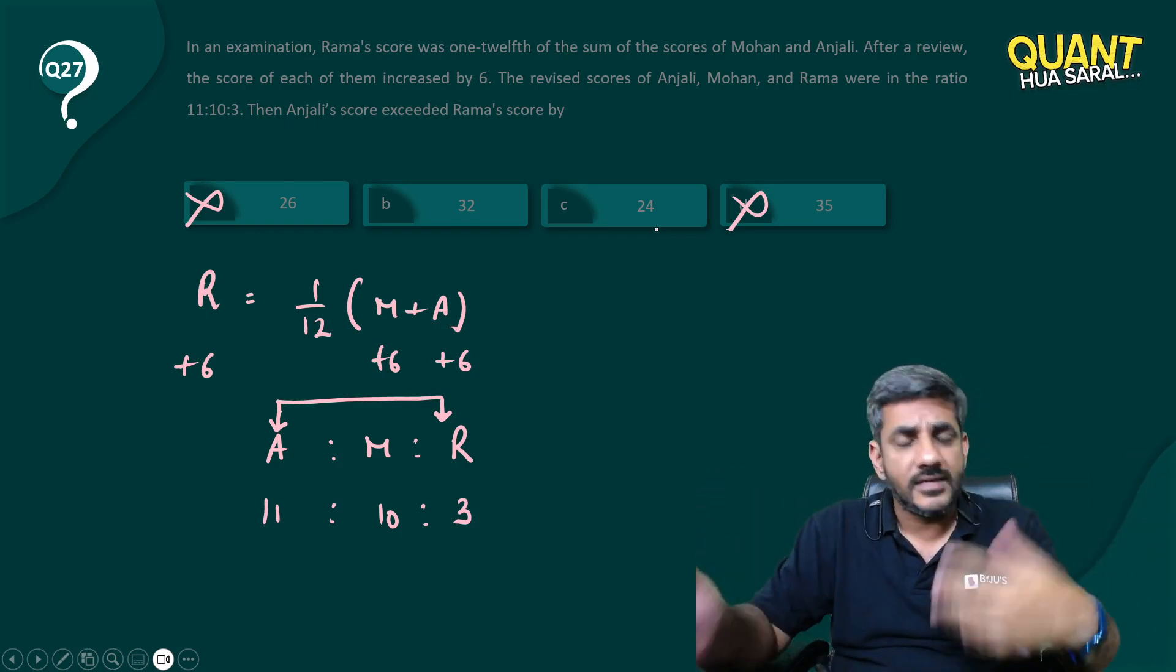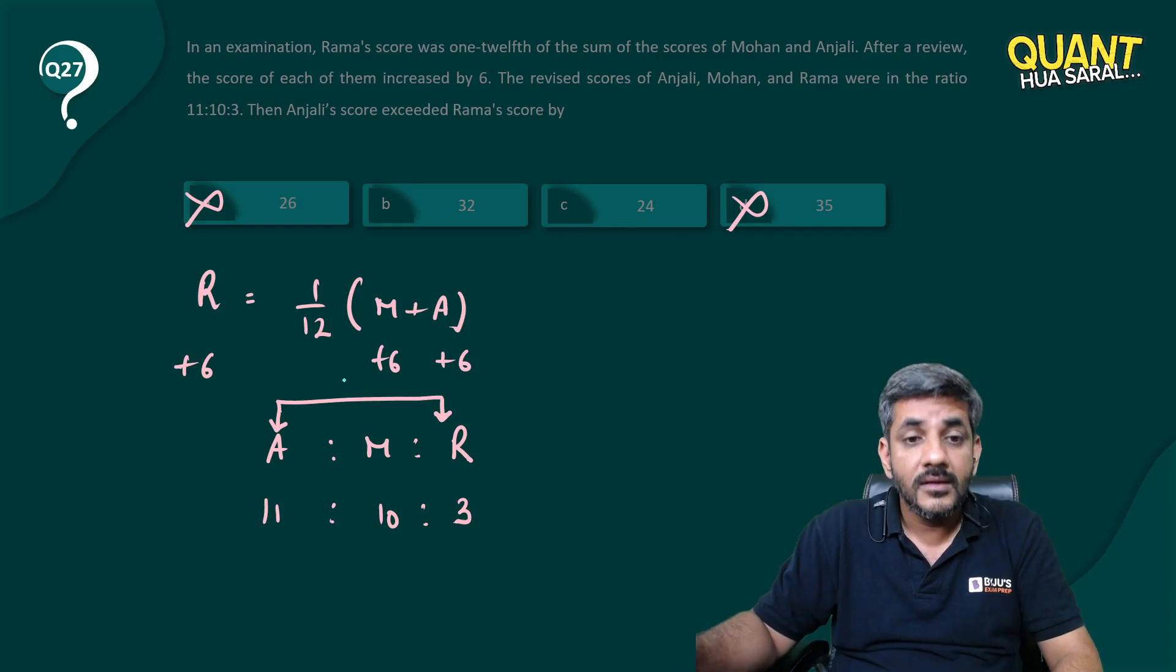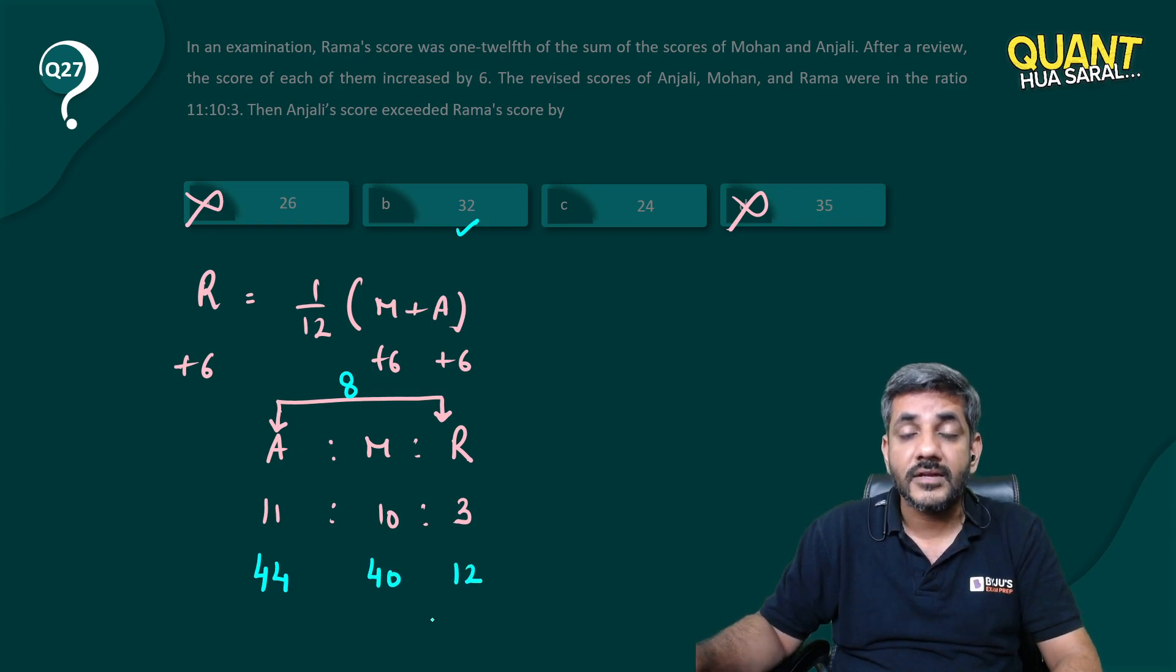Let's take 32. If I take 32 as the difference between their scores, currently the score difference is 8. The question says it should be 32, which is 4 times of 8. That means this score should be 4 times of 11, this score should be 4 times of 10, and this score should be 4 times of 3.